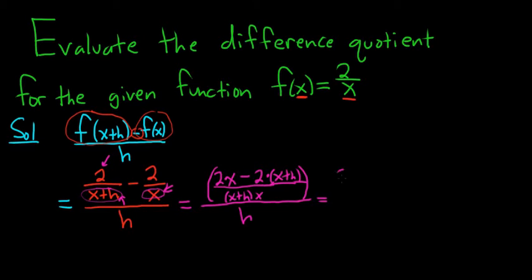This is equal to, so now we have 2x. Now we'll distribute the minus 2. So negative 2 times x is negative 2x, and negative 2 times h is negative 2h. All of this is over x plus h times x, and it's all being divided by h.